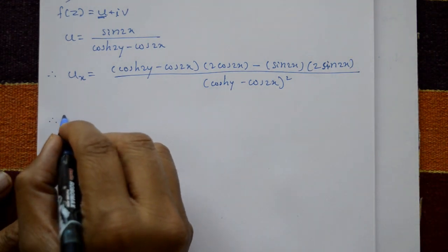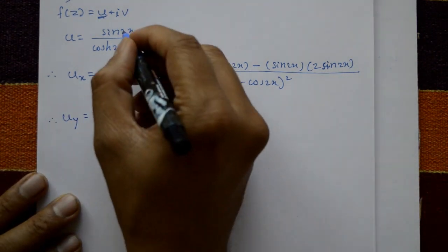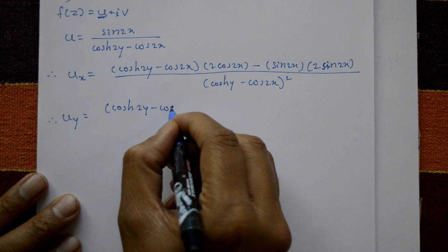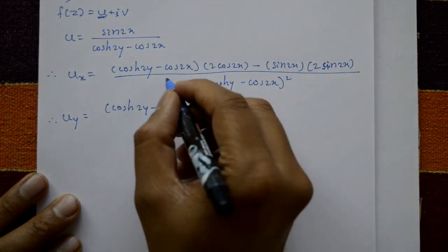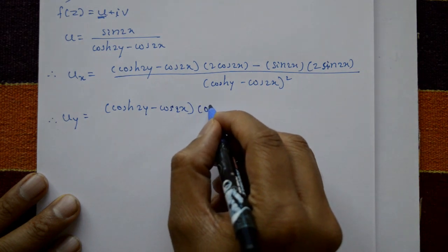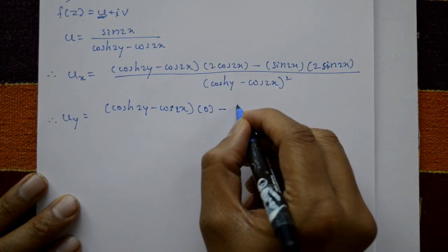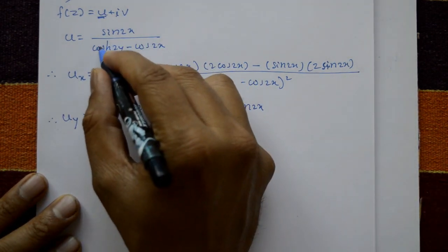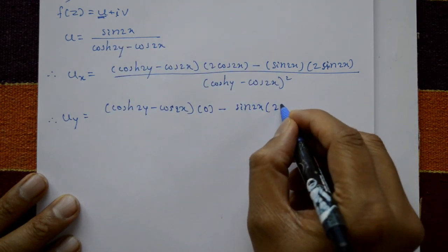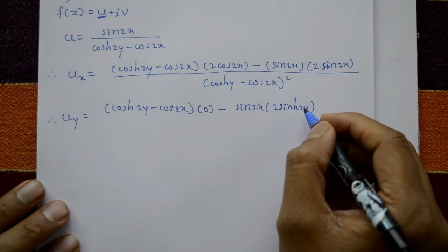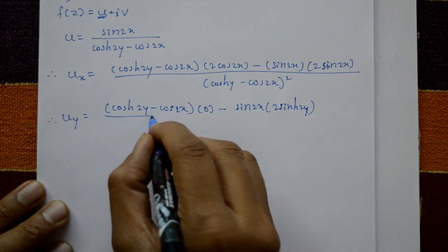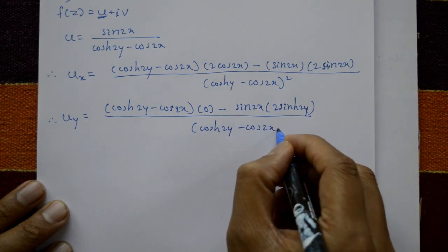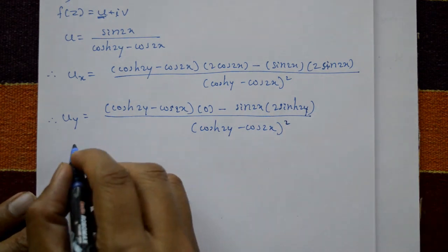Now differentiate u with respect to y partially. Again using the quotient rule: denominator (cosh(2y) - cos(2x)) stays, and the numerator sin(2x) has no y variable so it is 0. Minus sin(2x) times the derivative of denominator with respect to y: cos(2x) is 0, and differentiate cosh(2y) gives 2sinh(2y). Divided by (cosh(2y) - cos(2x))².